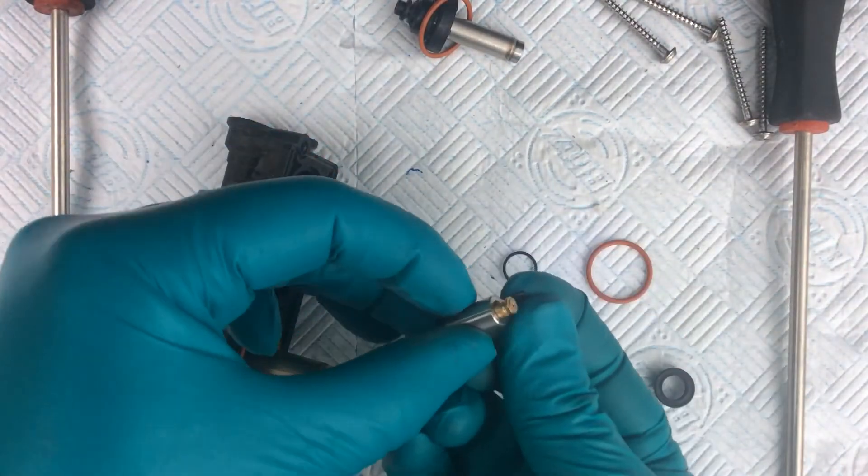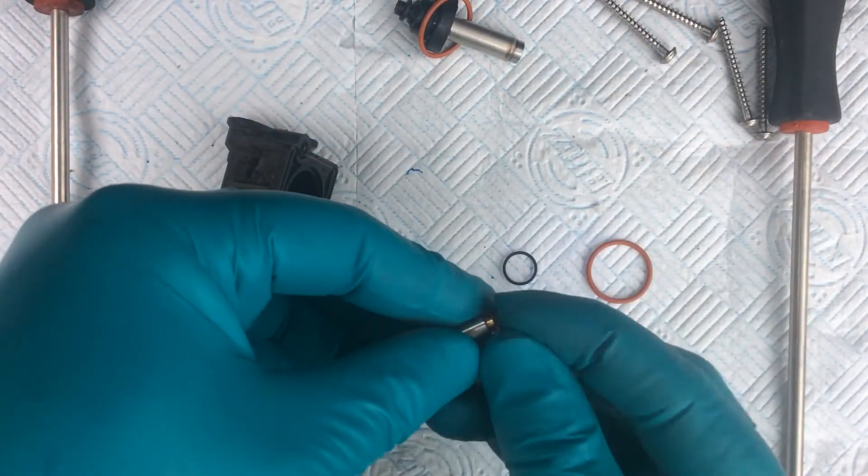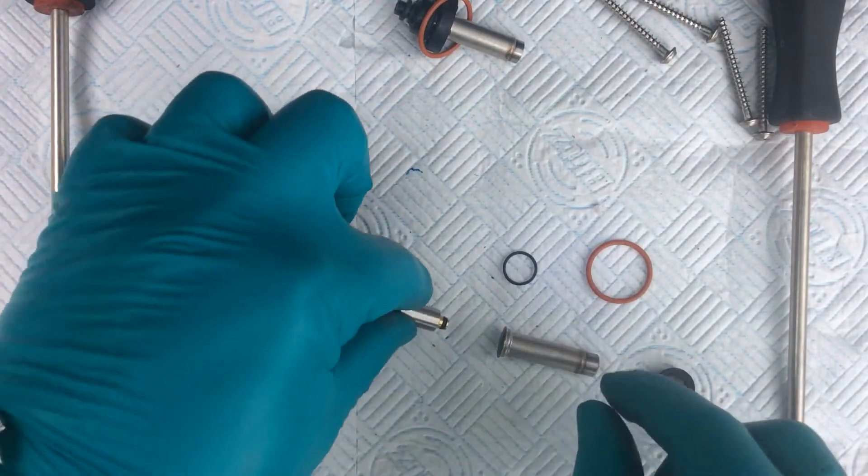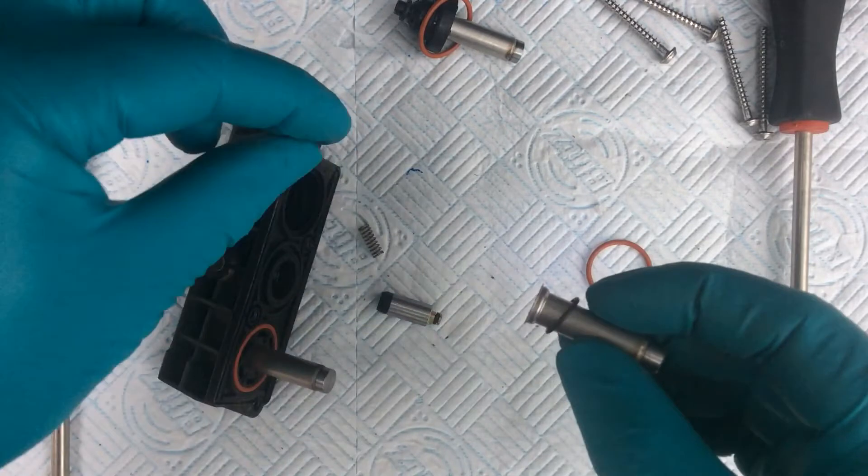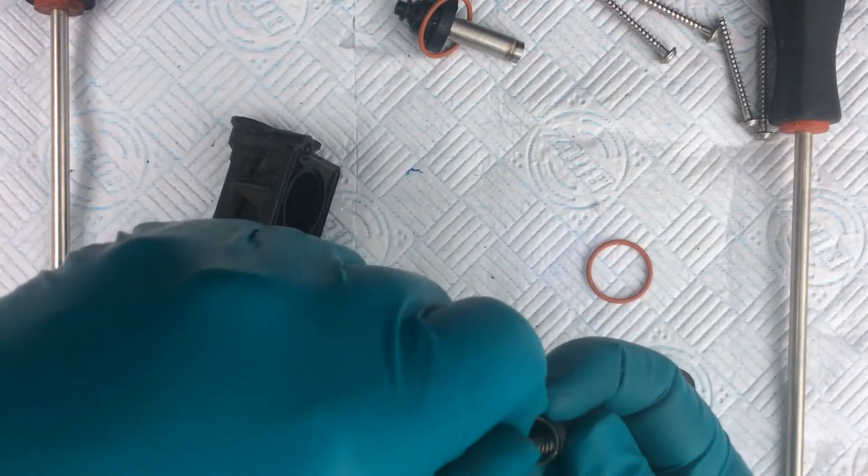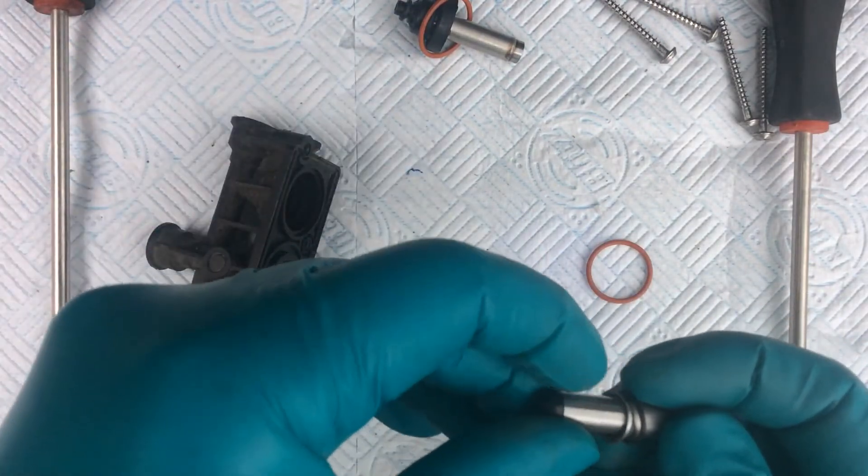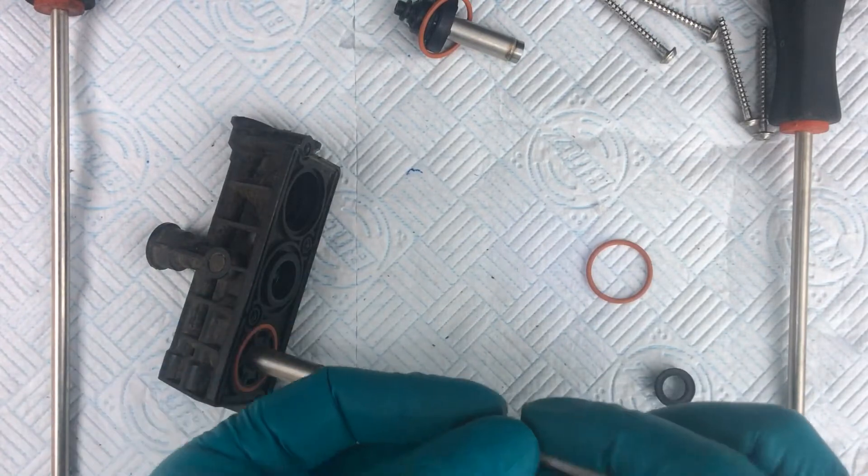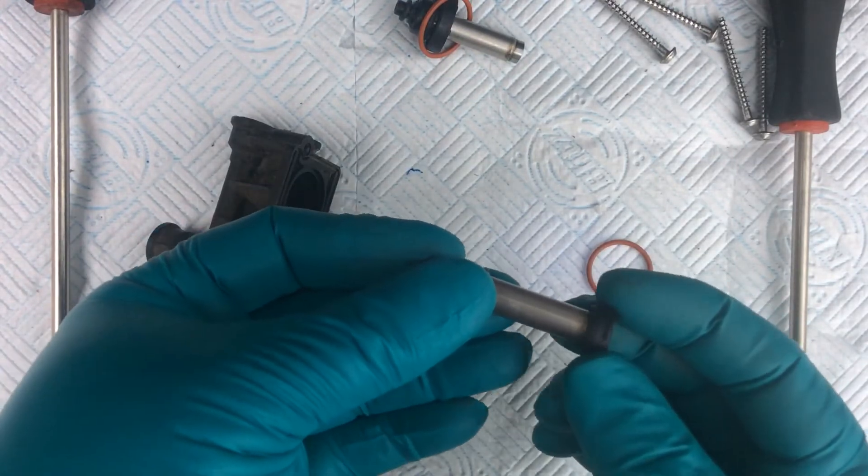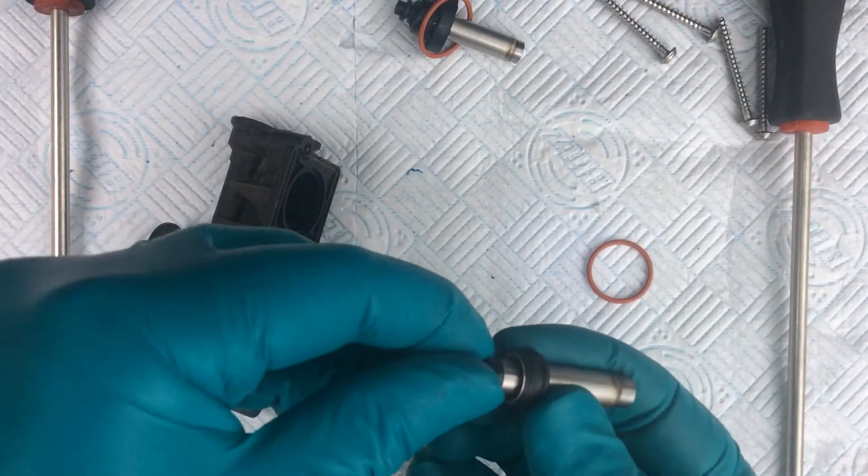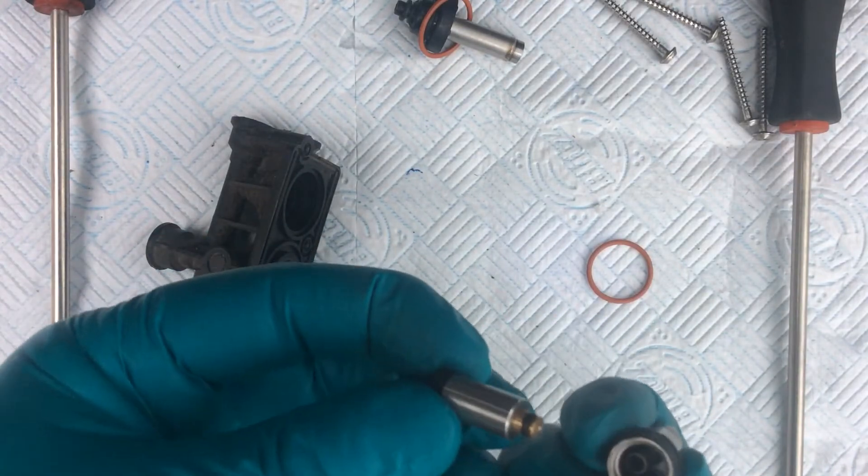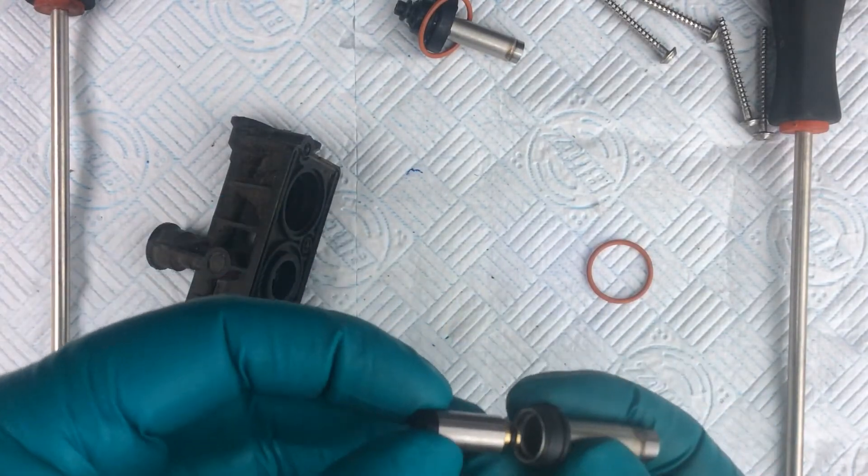So then you have the new small seal goes on there. New medium sized seal goes back on there. I forgot the spring goes in there. And then the end of that goes on there. So that will spring in and out quite happily, which is what it's intended to do.